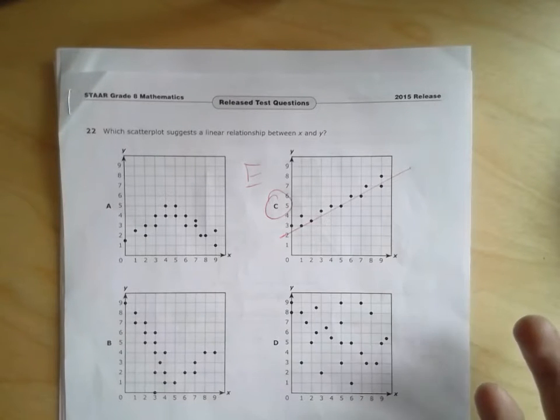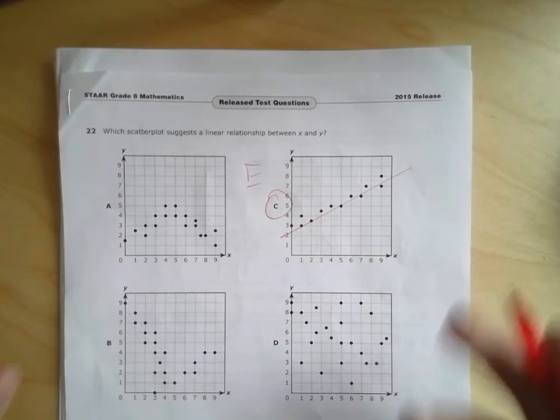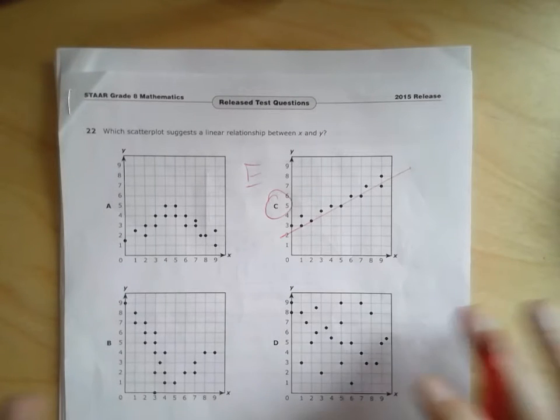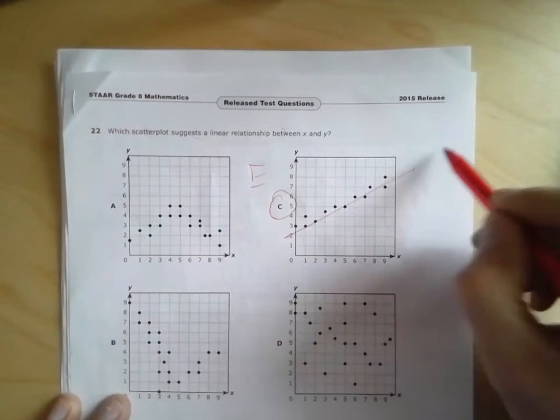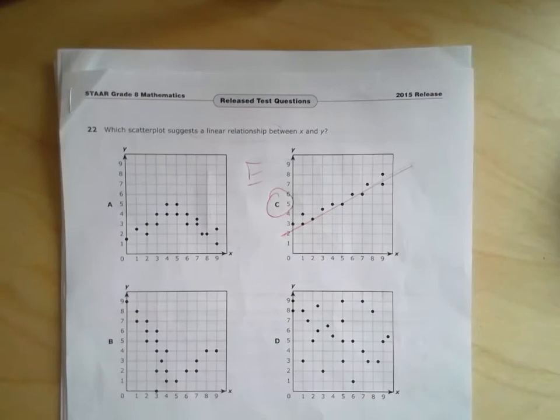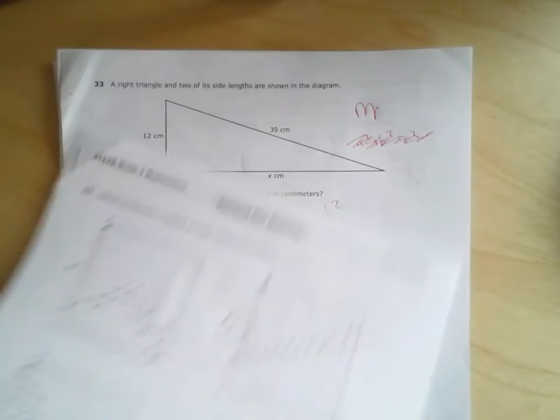This would be another easy problem. Within 15 seconds or less, you will probably have a good idea what the correct answer is here. Which one suggests a linear relationship? The one where the dots are all in a straight line. So for me, this would be an easy problem, because it doesn't take much effort, just sort of recognition of what you're being asked for.